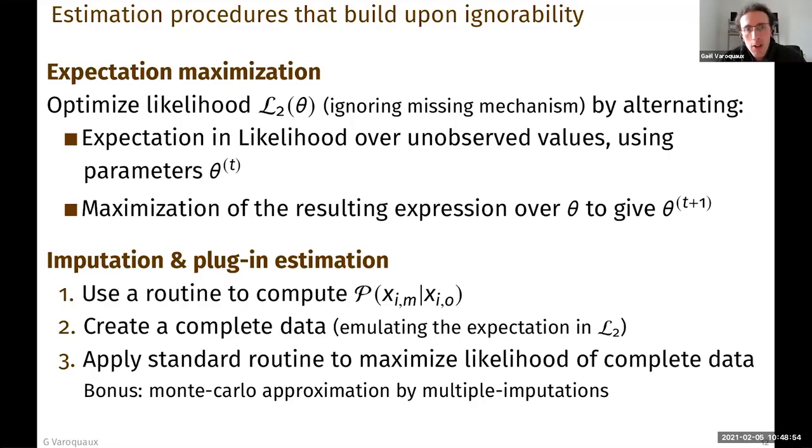There's another approach which is to use imputation, which is a routine that will compute the probability of the missing values given the observed. And then using this probability will create a complete data, for instance, by imputing by the conditional expectation. And this enables us to emulate the expectation in the likelihood that ignores the missing mechanism.